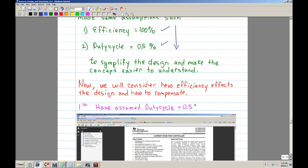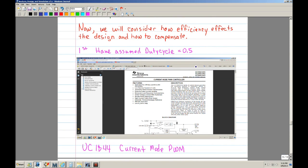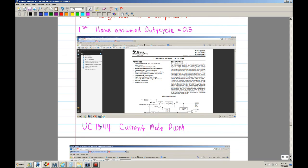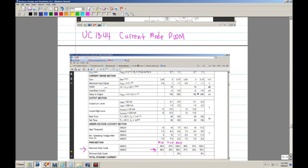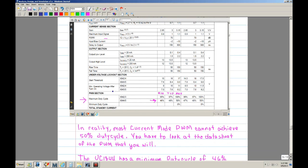Now we're going to consider how the efficiency affects the design and how to compensate. The first one I'm going to talk about is duty cycle. Like I said, I assumed that the duty cycle was 0.5 to simplify the concept. But let's examine that. If you look at a data sheet of a PWM, let's say I picked this PWM UC1844, and if you look at the data sheet, you will see that this is the current mode PWM.